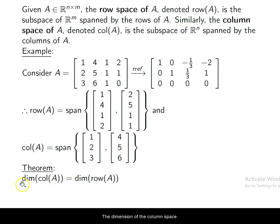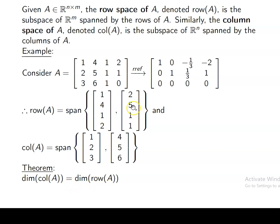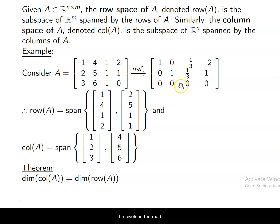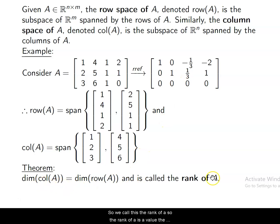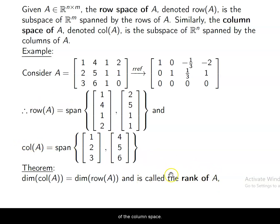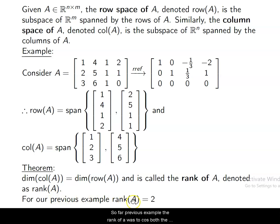Here's the theorem: the dimension of the column space, which in this case is 2, is always equal to the dimension of the row space of A, which is also 2. This makes sense because there are only two pivots — the pivots in the columns are the same as the pivots in the rows. We call this the rank of A. The rank is the dimension of the row space or the dimension of the column space, denoted rank(A). For our previous example, the rank of A was 2 because both the column space and the row space have dimension 2.